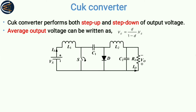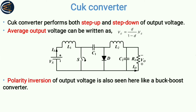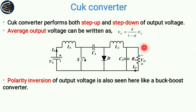The Ćuk converter has some differences from the buck-boost converter. The number of inductors and capacitors are both double compared to the buck-boost converter. One more point: polarity inversion of output voltage is also seen here, like a buck-boost converter. Conventionally, the plus should come on one side and minus on the other, but here it is reversed, which creates some circuit complexity.